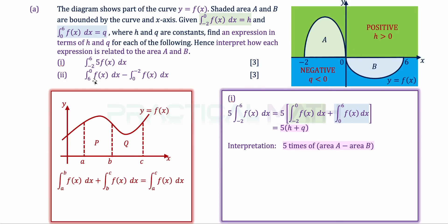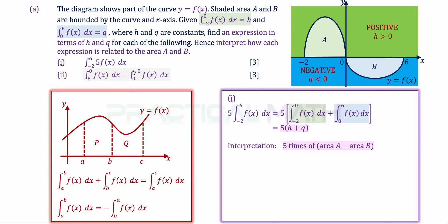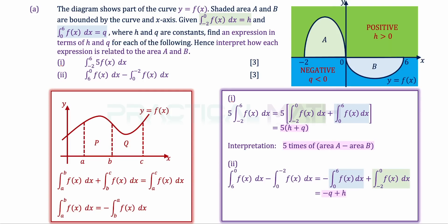In A part 2, the limits are swapped: originally 0 to 6 is now 6 to 0, and originally -2 to 0 is now 0 to -2. The relevant definite integral property is that integrating f(x) from A to B equals negative the integral from B to A. So swapping the limits introduces a negative sign.